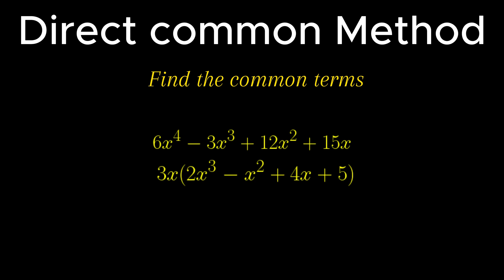Here 3x is the first factor, while 2x cubed minus x squared plus 4x plus 5 is the second factor of the given expression 6x to the power 4 minus 3x cubed plus 12x squared plus 15x. In simple words, both 3x and 2x cubed minus x squared plus 4x plus 5 can completely divide the given expression.